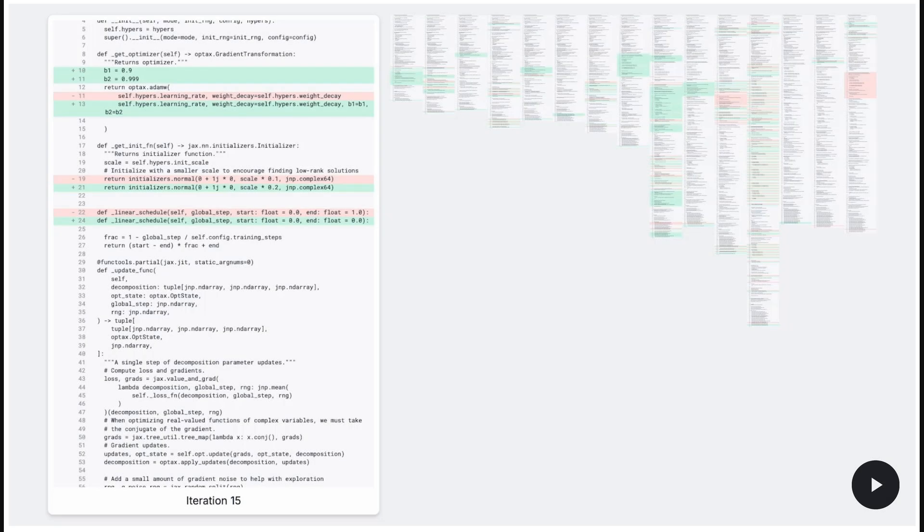This figure gives us a peek under the hood at AlphaEvolve's evolutionary process in action. On the left, we see a snippet of code, likely a program being optimized. Notice the highlighted lines. Green indicates additions and red, deletions, showing how the code is modified or mutated.